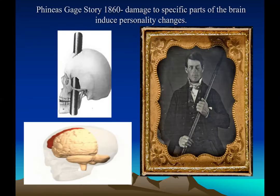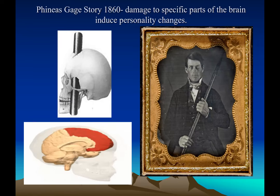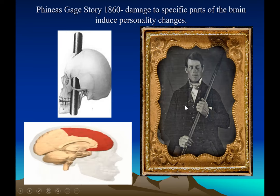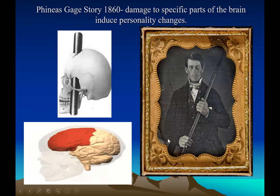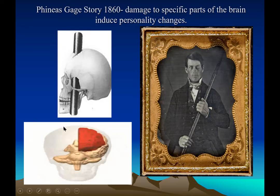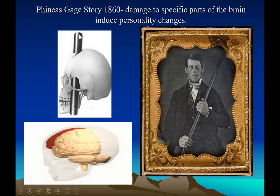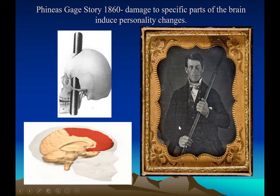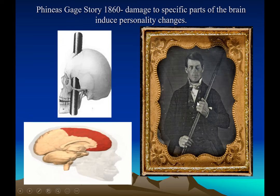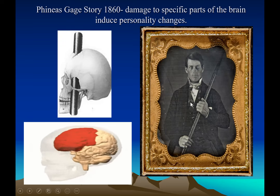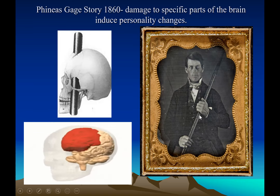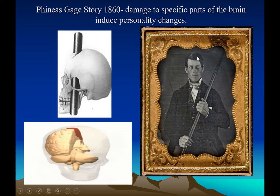There is an interesting story about Phineas Gage in the 18th century. He was working on a railway track when an accident caused a rod to pierce through his frontal cortex. People thought he wouldn't survive, but he lived. Surprisingly, he was a very nice person before the injury, but his personality changed — becoming angry and mean after the accident. This is a clue that your personality resides in your frontal cortex.